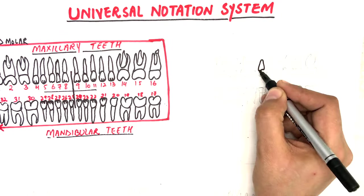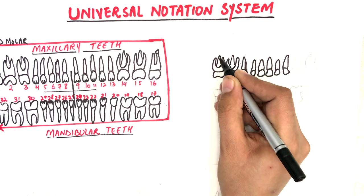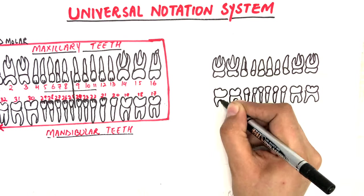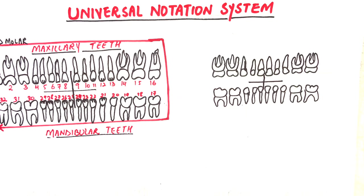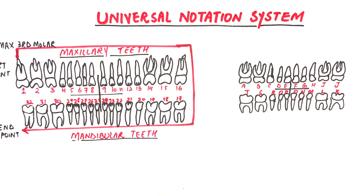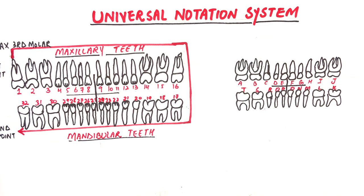For primary dentition, instead of numbers we use alphabets. In the universal numbering system for primary teeth, beginning with A, the upper right maxillary second molar goes sequentially along the same arch up to J, which represents the upper left maxillary second molar. We then drop down to K, which represents the mandibular second molar, move in a clockwise position, and end at T, which represents the right mandibular second molar. The universal numbering system for the entire primary and permanent dentition is shown as follows.